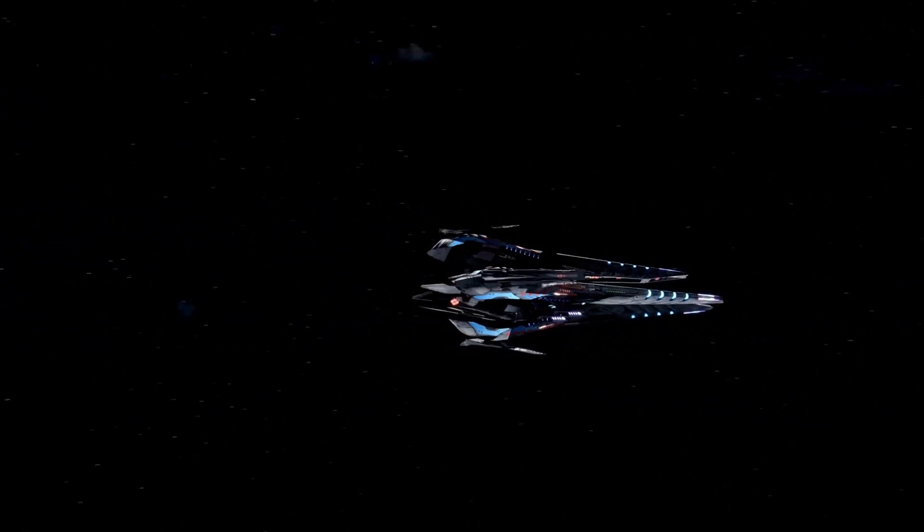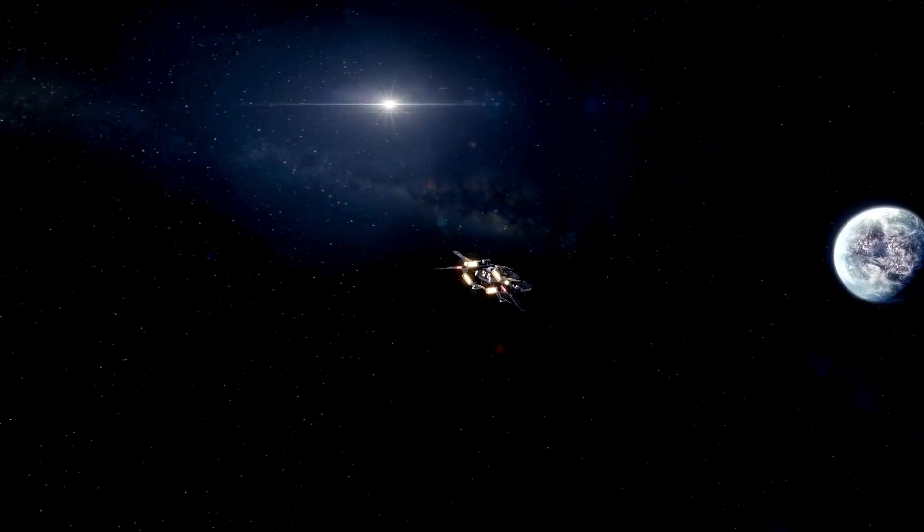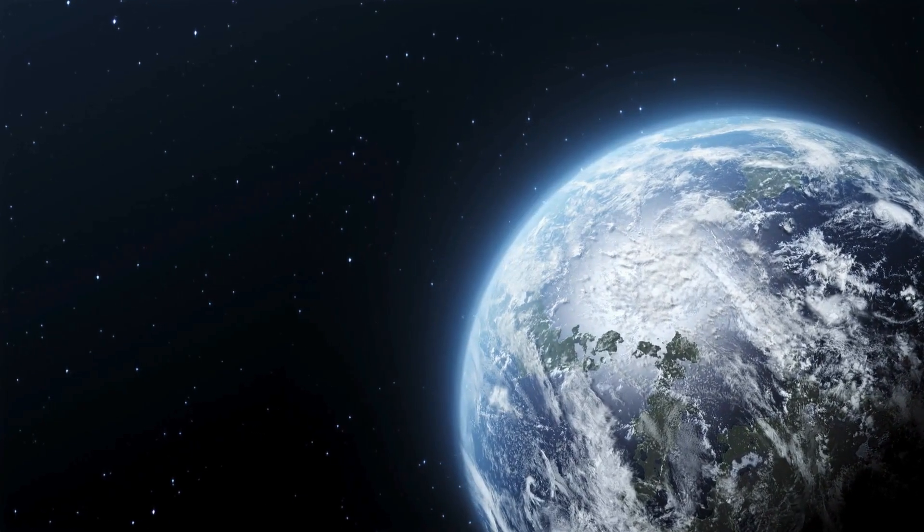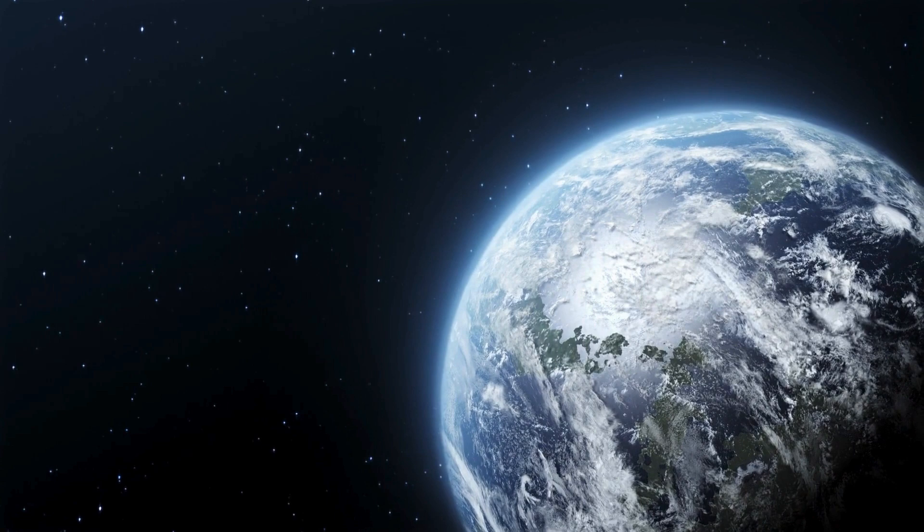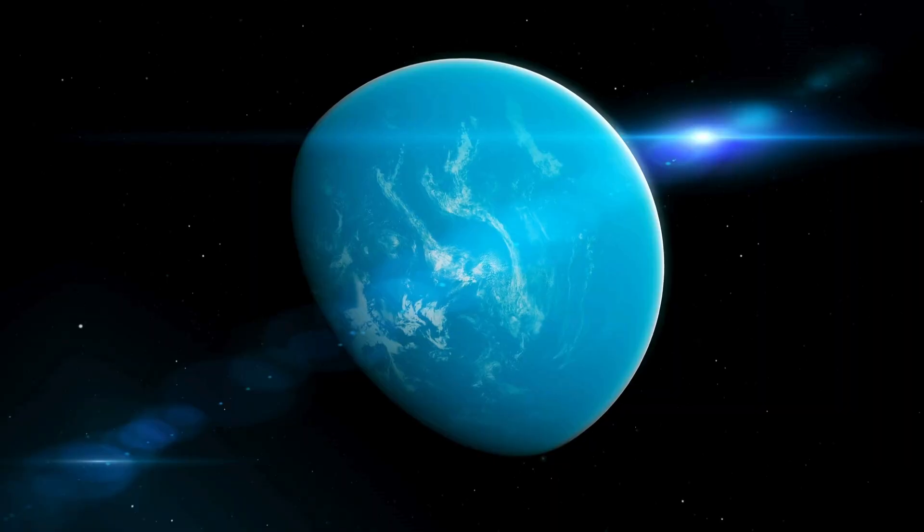Proxima b, about 4.25 light-years away, was believed to be tidally locked, with a permanent day-side and night-side, similar to our Moon. A hypothetical technological civilization on Proxima b might transfer heat and electricity from the day-side to the night-side using photovoltaic cells that generate electricity from starlight.